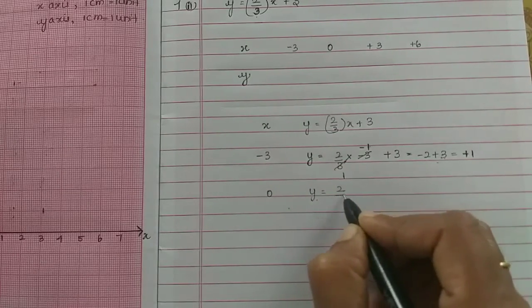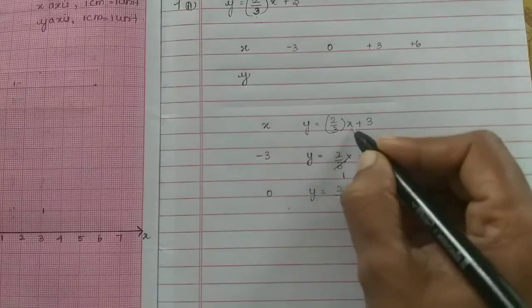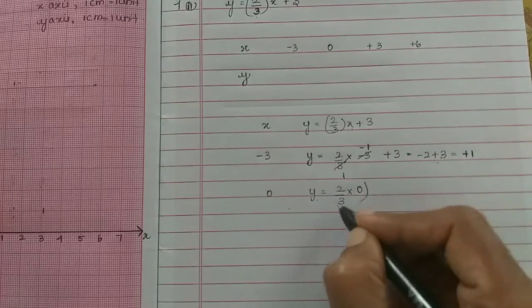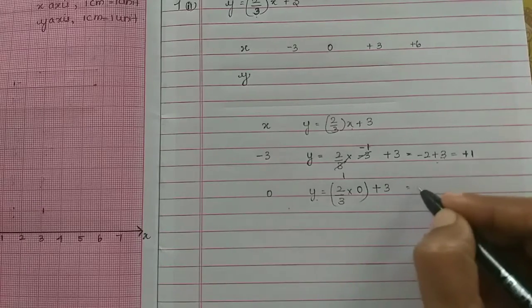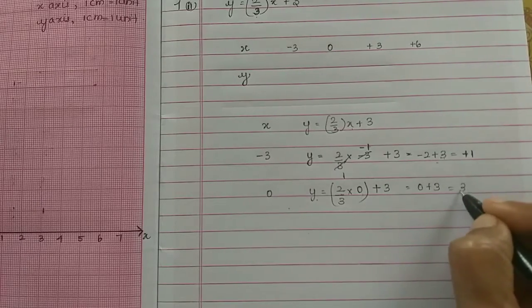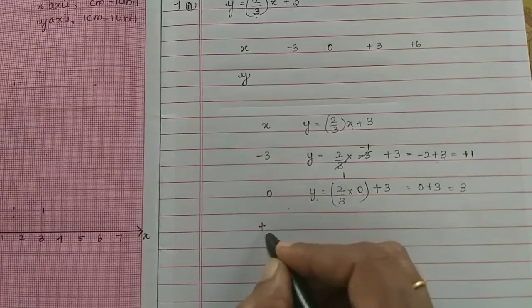So y equals 2/3 times x value 0 plus 3. 0 times anything is 0. So 0 plus 3 is going to be 3. Next, plus 3 is going to be 3.